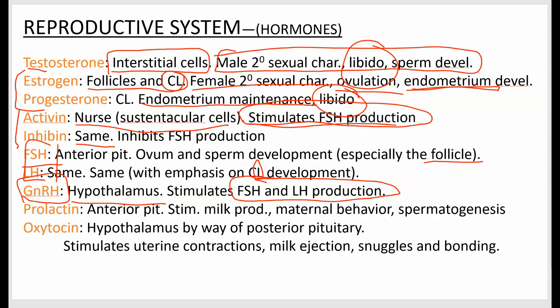Prolactin, made in the anterior pituitary, stimulates milk production — the mammary glands will produce milk when exposed to prolactin. It also promotes maternal behavior, so if you're making milk, you tend to be interested in nursing and taking care of the offspring. Prolactin also helps in males with spermatogenesis.